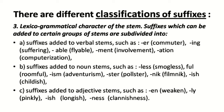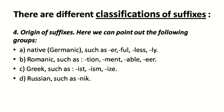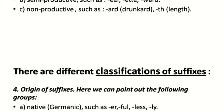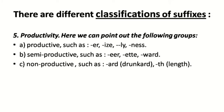The next classification is based on the lexicogrammatical character of the stem. We have: suffixes added to verbal stems, suffixes added to noun stems, and suffixes added to adjective stems — with examples visible on the slide. The classification by origin of suffixes includes native or Germanic suffixes, Romanic, Greek, and Russian. Suffixes can also be classified by productivity: productive suffixes are used to make new words in modern English, semi-productive suffixes are less productive but still used, and non-productive suffixes — often borrowed or Old English — are no longer used to form new words.